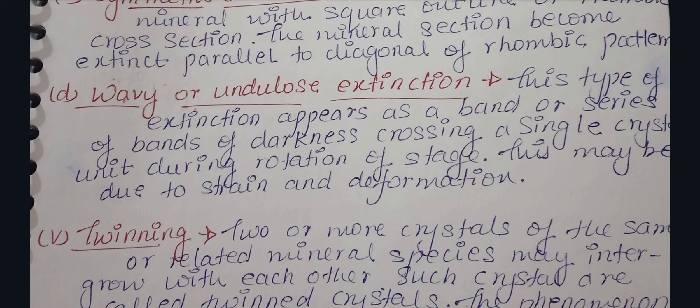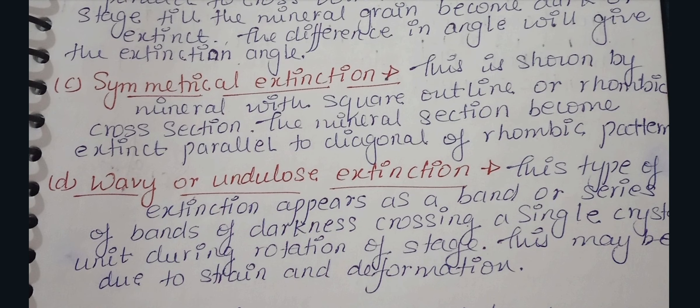These are the four types of extensions. In today's video, we covered the entire unit on types of extensions: straight or parallel, oblique or inclined, symmetric, and wavy or undulose extension. This is all for today's video. Thank you for watching.